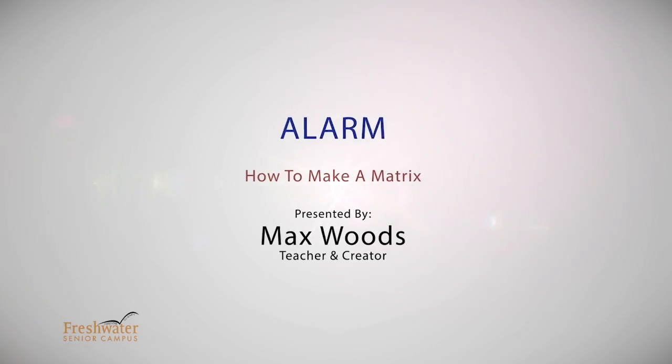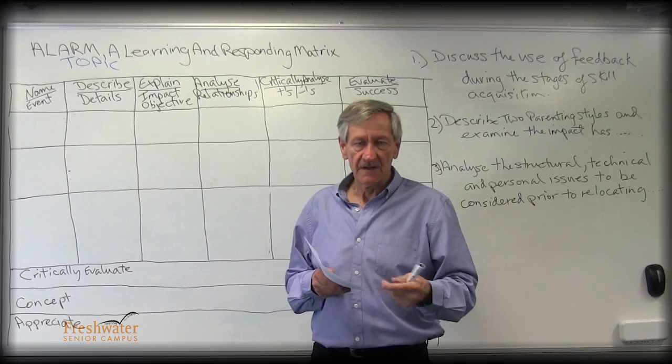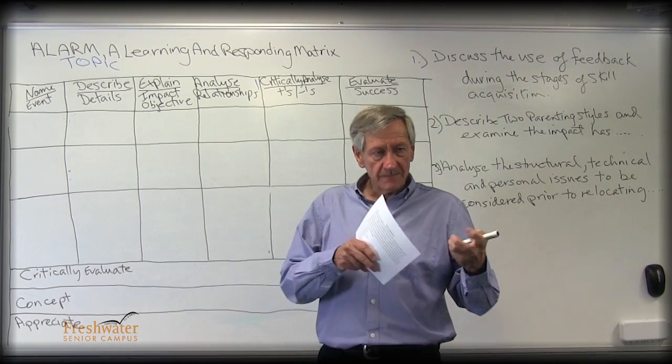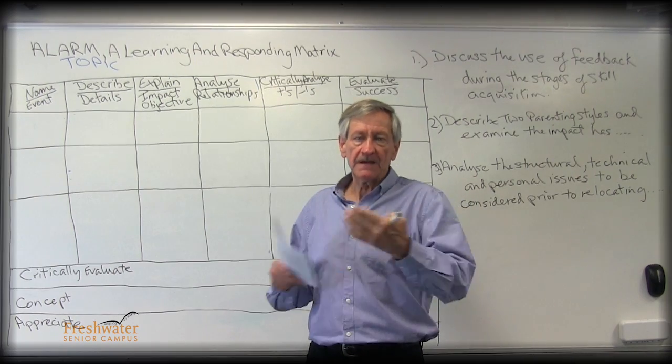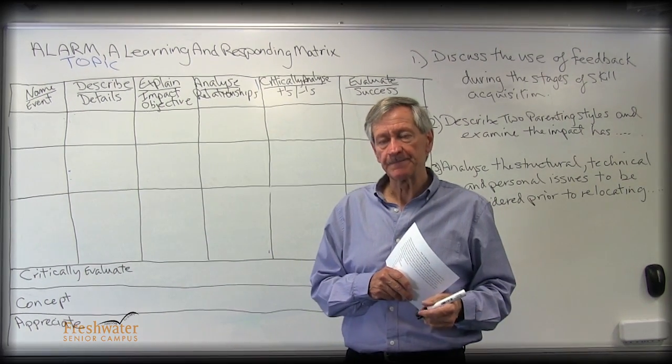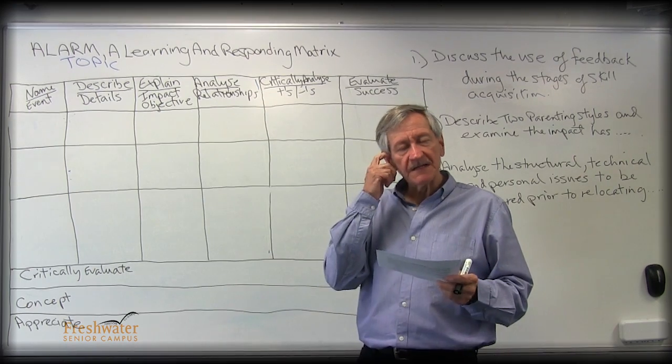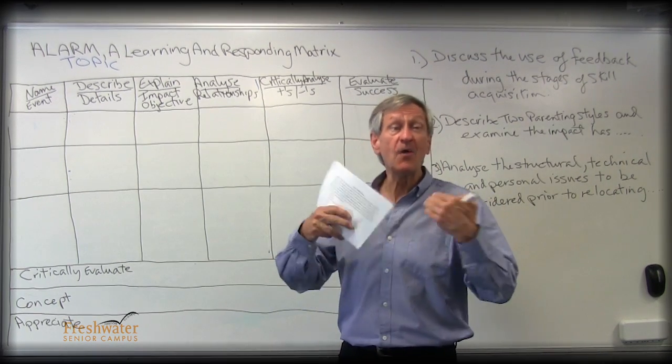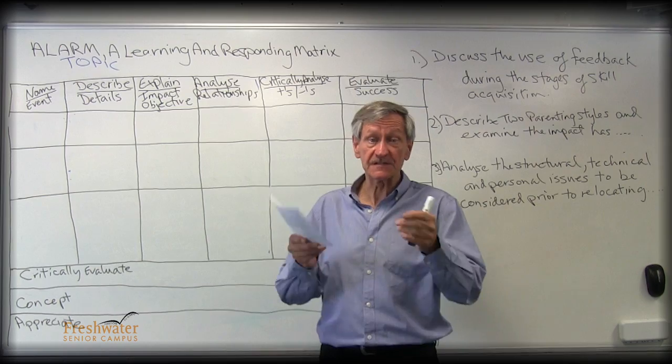Okay, we've seen how that matrix worked in a revision-type way, like a mapping backwards. What we need to now see is, how do I make a matrix for yourselves?